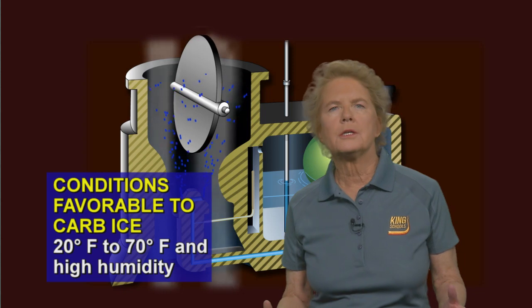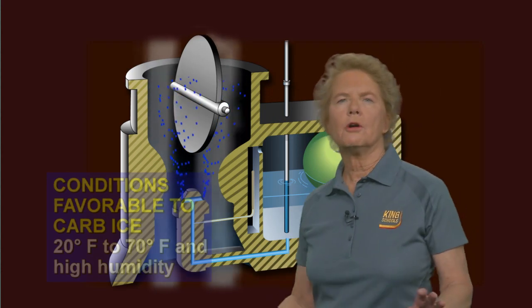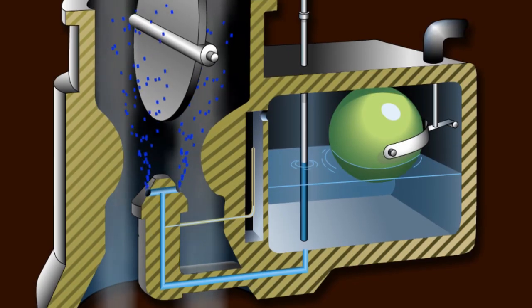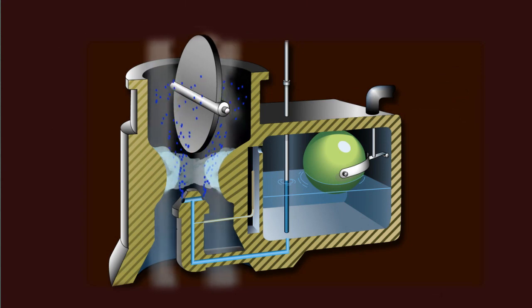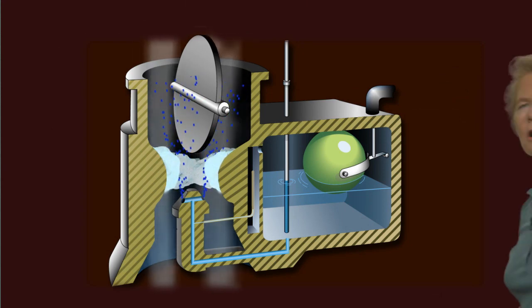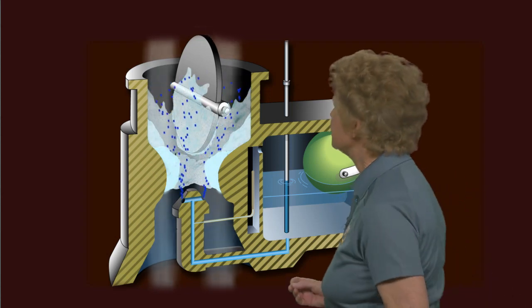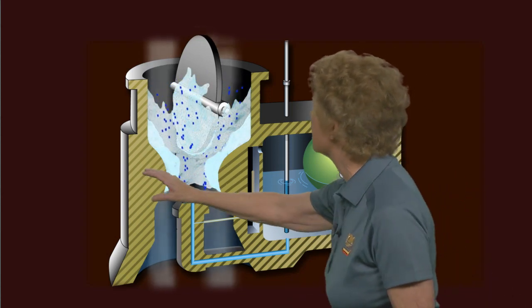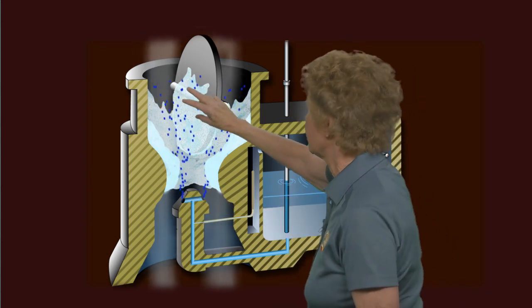You can get carb ice with temperatures as high as 70 degrees Fahrenheit as long as you've got high humidity, because of the fact that the air has a very big temperature drop as it goes through the carburetor. If carburetor ice is going to form, it's going to form basically right around the venturi throat in the carburetor, and it's also going to form on the throttle valve.